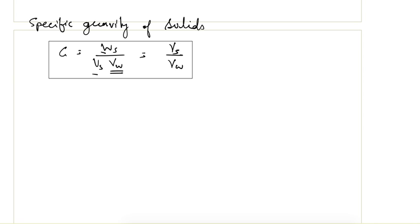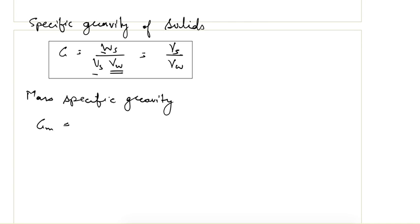Next is the mass specific gravity, denoted with G. It is equal to the bulk unit weight divided by the unit weight of water.